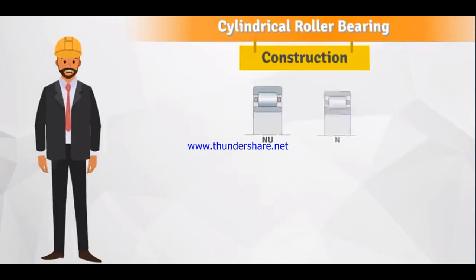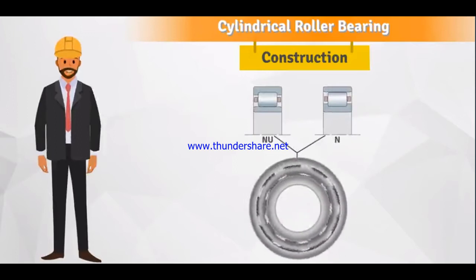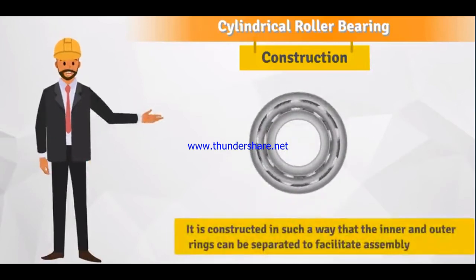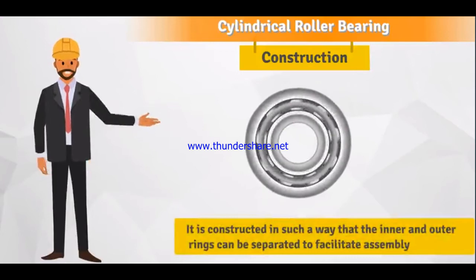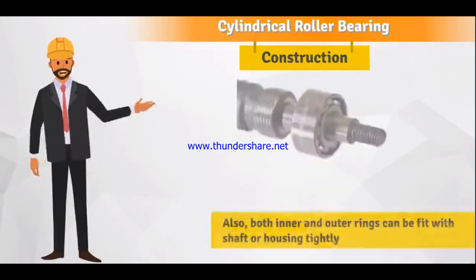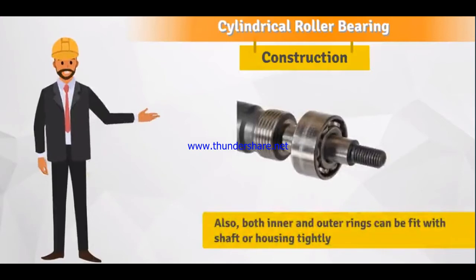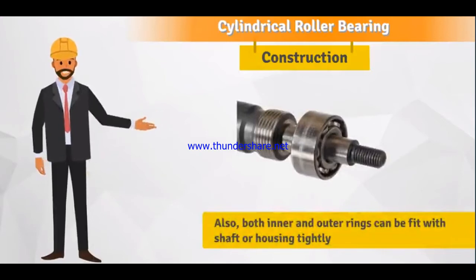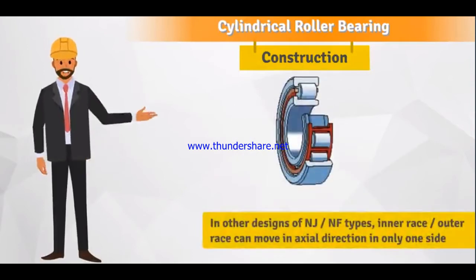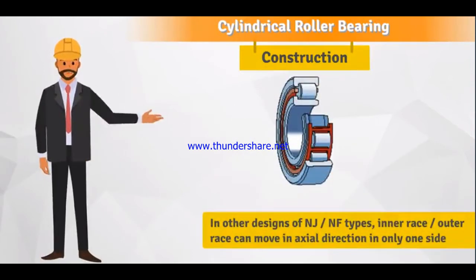There are two or four rows of rollers used for larger loads. Either the inner race (design N, NU) or outer race (design N) can move freely in the axial direction. The bearing is constructed so that inner and outer rings can be separated to facilitate assembly, and both rings can be fit with shaft or housing tightly.